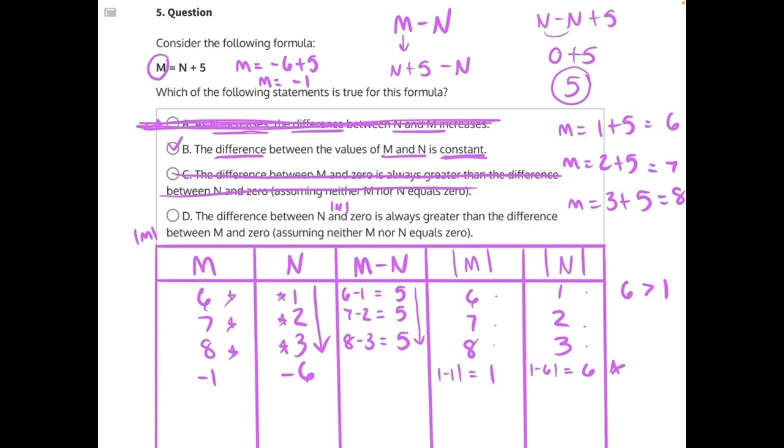the absolute value of N, 1 is not greater than 6, 2 is not greater than 7, 3 is not greater than 8. So D is also incorrect, making B our only correct answer.